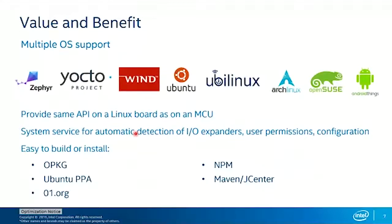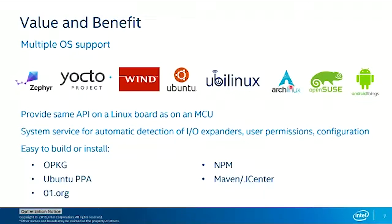We also give you multiple OS support. Going from left to right on the spectrum, we have some support for real-time OS — that would be Zephyr OS, an open Linux Foundation project. Then we support the Yocto project, which is what we started for our Intel Galileo and Intel Edison boards with Poky Linux. We moved on to Wind River as well, especially for some of the Intel Gateways. Nowadays we also support Ubuntu, and smaller Linux distributions like UBLinux from Emutex, Arch Linux, and OpenSUSE.